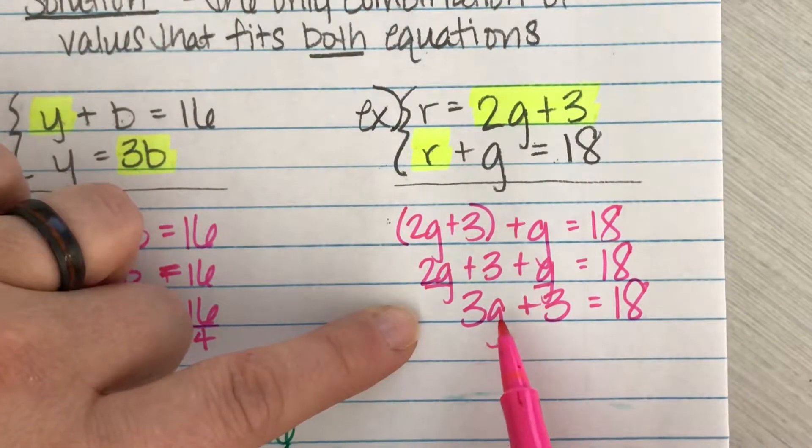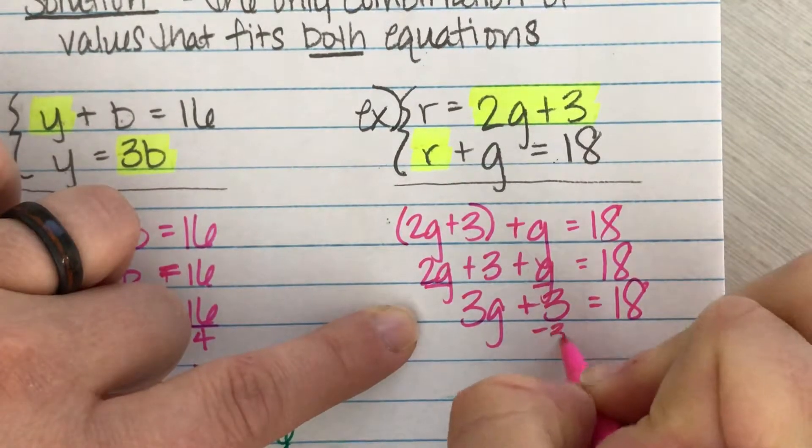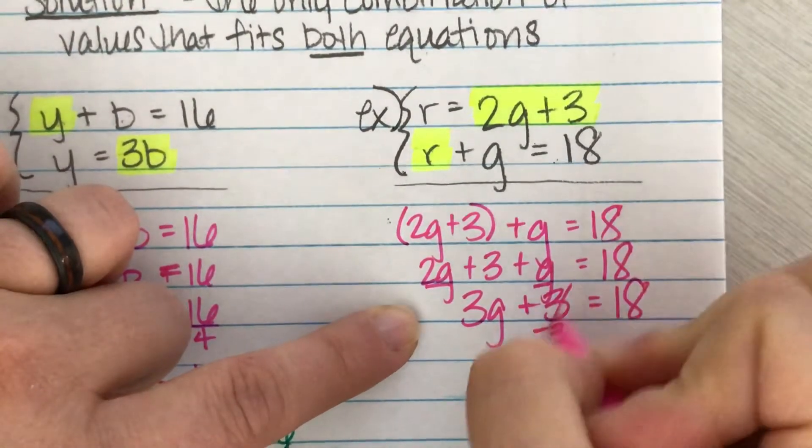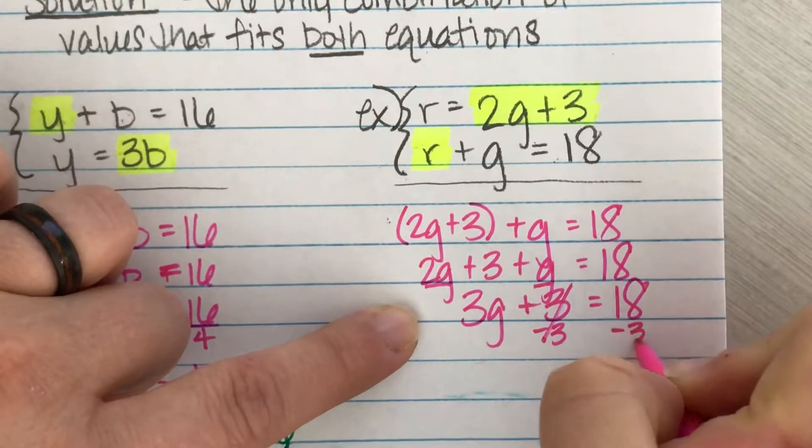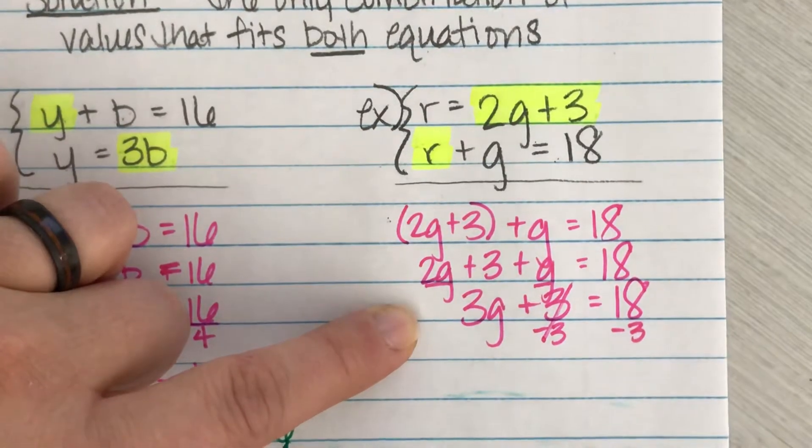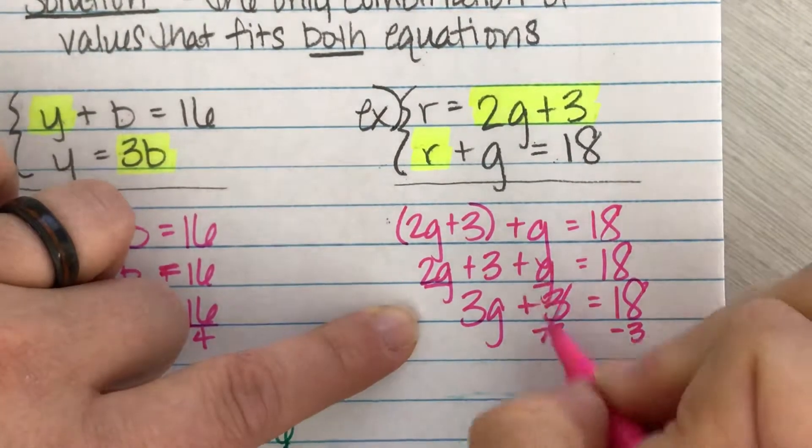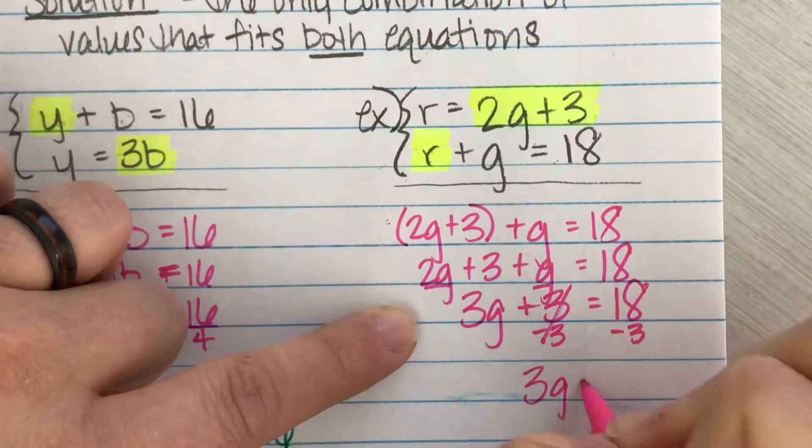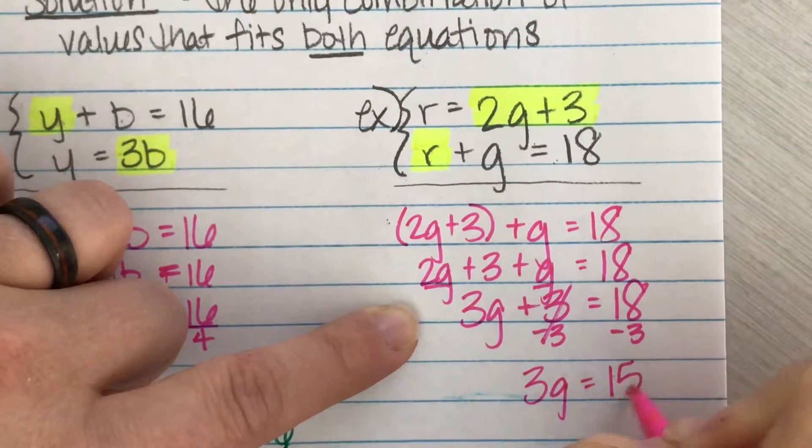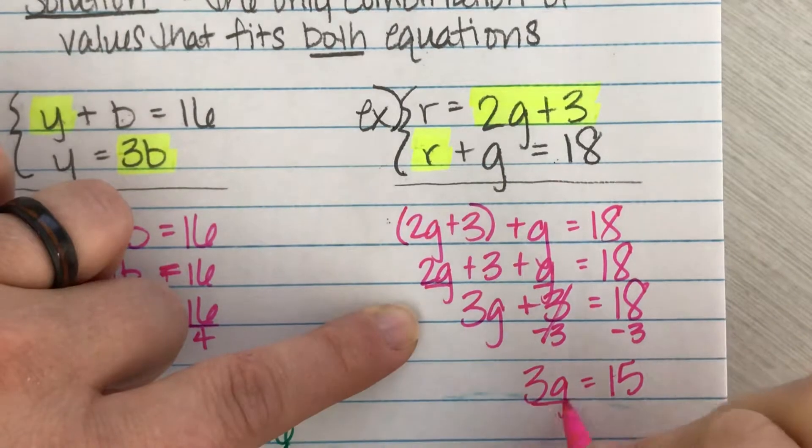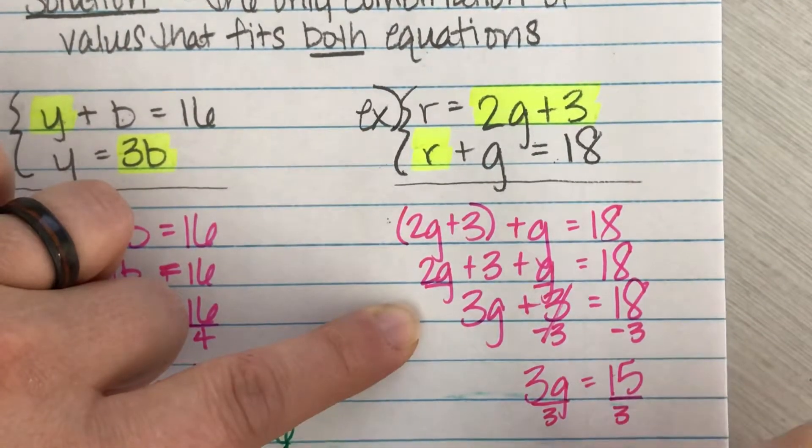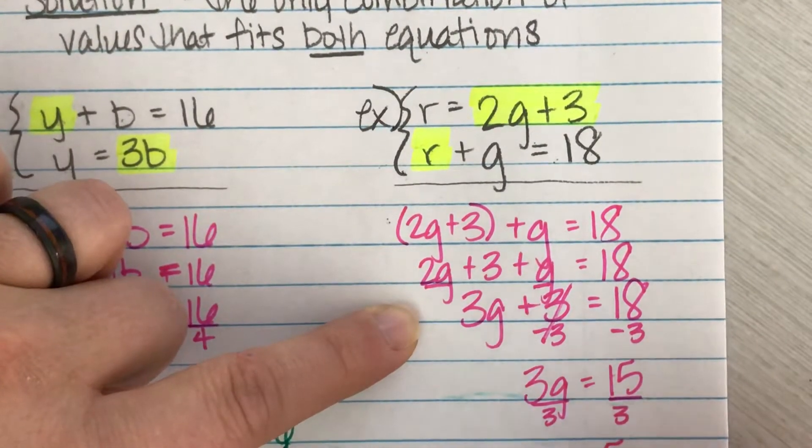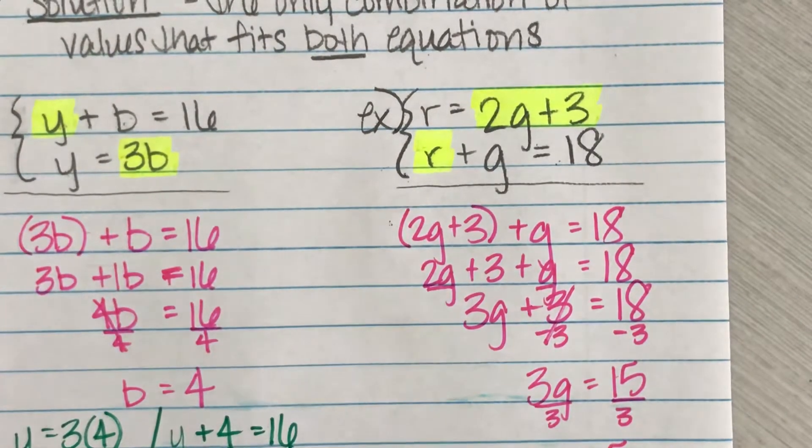This is a pretty straightforward two-step problem. So if I'm trying to isolate g, I'm going to subtract this three first. Plus three minus three cancels out. If I do it to that side of the equation, I have to also do it on the right side. So I end up with 3g equals 15. Then I'm going to divide by three. And I end up with g equals five.